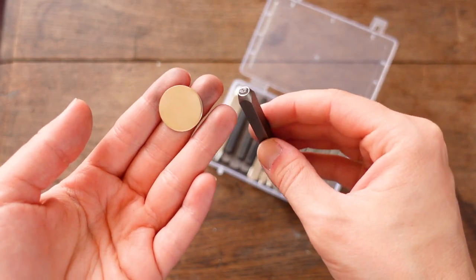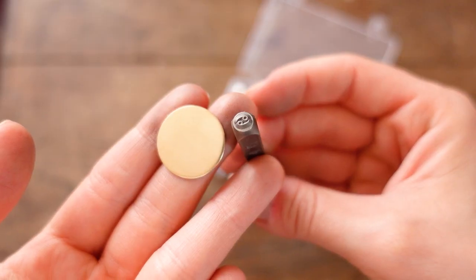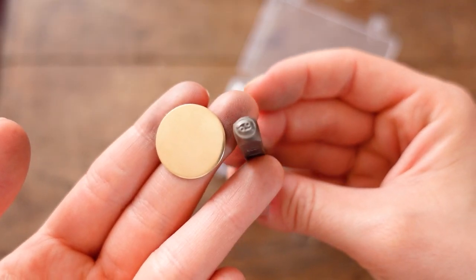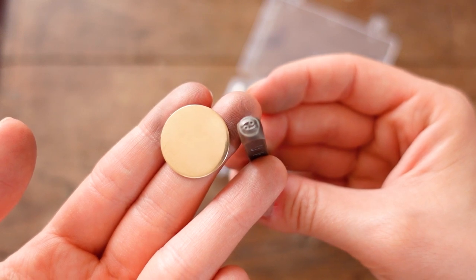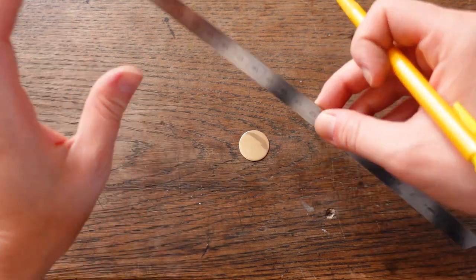Alright, time for stamping. I'm going to go for a very minimalistic look and I will use a single stamp with my zodiac sign, a cancer. I gently marked the middle of the disc using a ruler and a pencil.